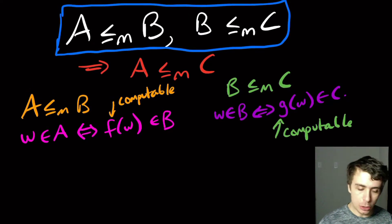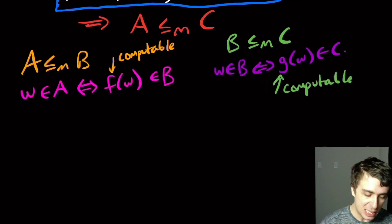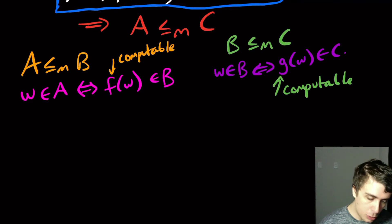So that means if we want to show that A mapping reduces to C, we better produce a computable function that converts inputs of A to inputs of C. So what we can do is let's just compose the two functions.